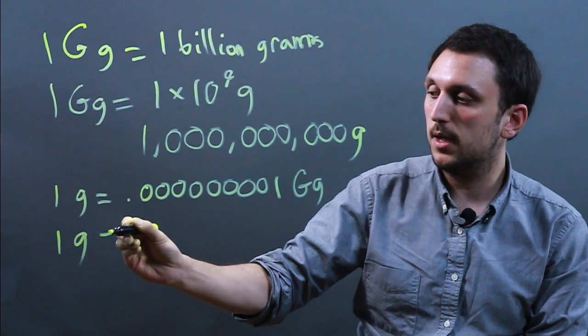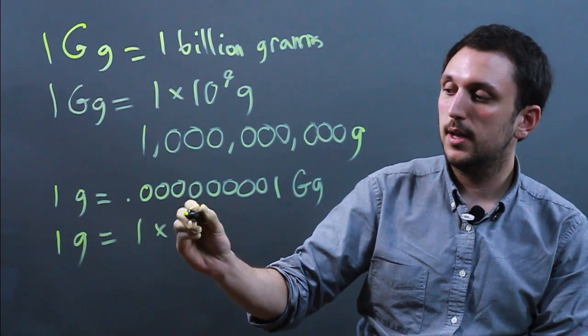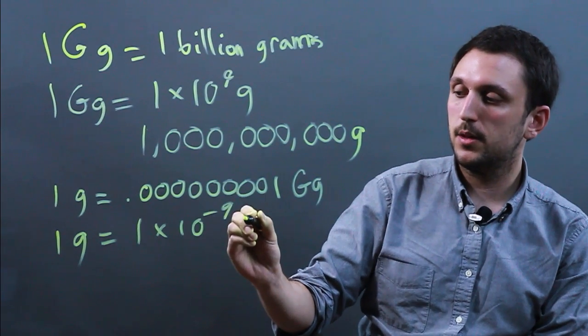Another way to write that would be one gram equals one times ten to the negative nine gigagrams.